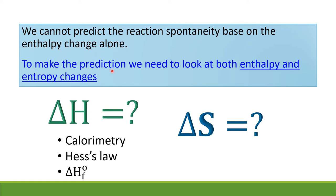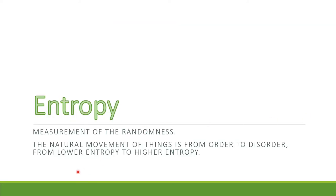To predict spontaneity, we need to look at both enthalpy change and entropy change. We already learned about enthalpy change and can get delta H by calorimetry, Hess's law, and delta H of formation. In this video, we will learn about delta S. Entropy (S) is defined as a measurement of randomness. This very important variable gives control to the changes in the universe. Everything in the universe moves from order to disorder, or from lower entropy to higher entropy.